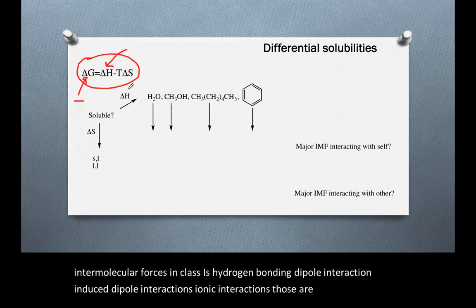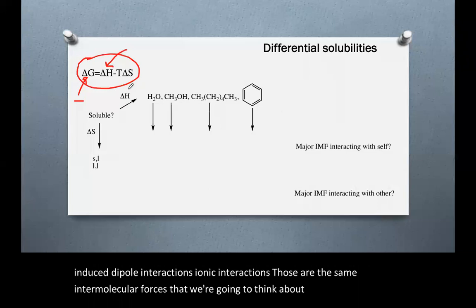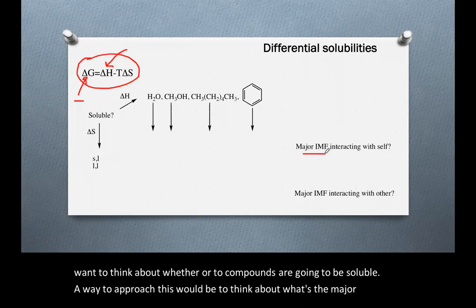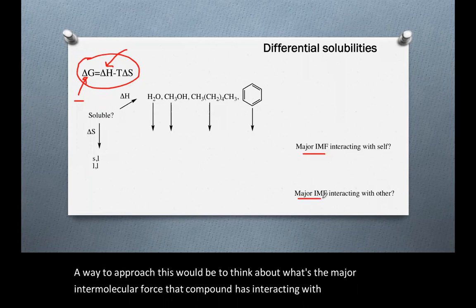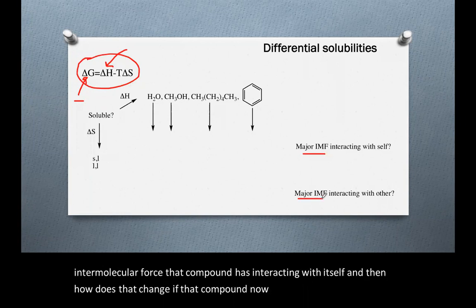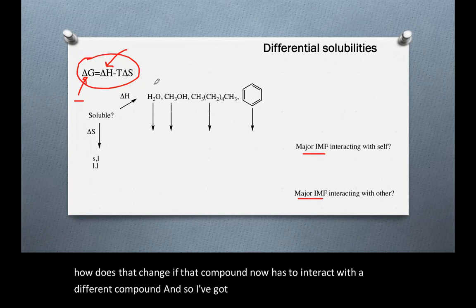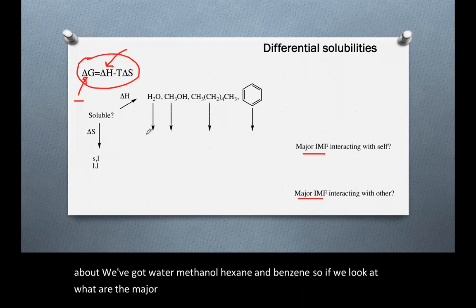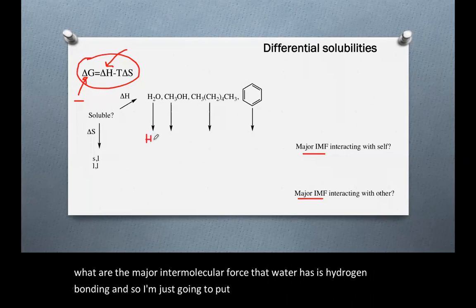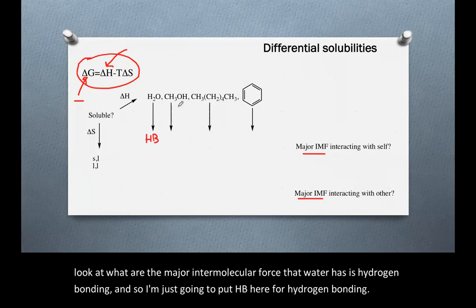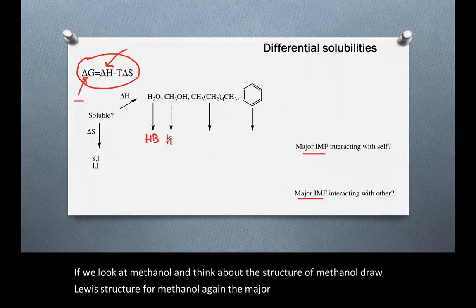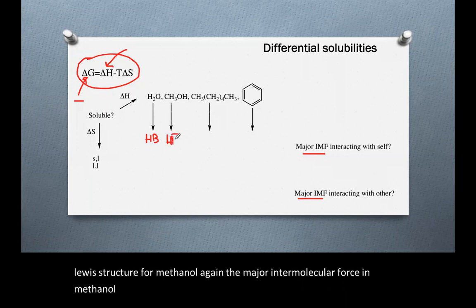Those are the same intermolecular forces we're going to think about here. To think about whether two compounds are going to be soluble, ask what is the major intermolecular force that compound has interacting with itself, and how does that change if it now has to interact with a different compound. I've got four solvents to consider: water, methanol, hexane, and benzene. Water's major intermolecular force is hydrogen bonding (Hb). Methanol also has hydrogen bonding as its major intermolecular force (Hb).